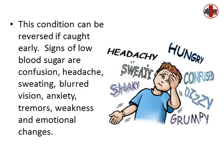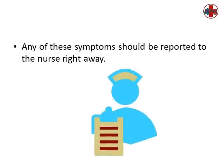This condition can be reversed if caught early. Signs of low blood sugar are confusion, headache, sweating, blurred vision, anxiety, tremors, weakness, and emotional changes. Any of these symptoms should be reported to the nurse right away.